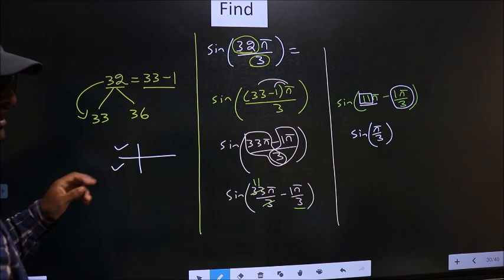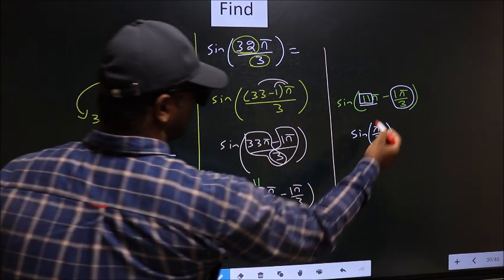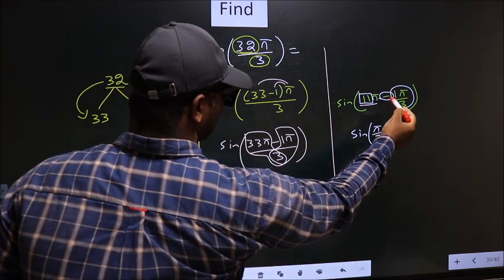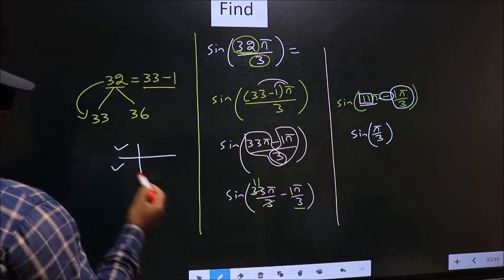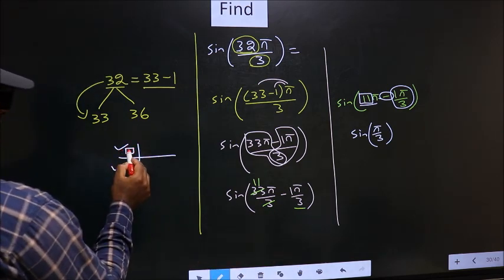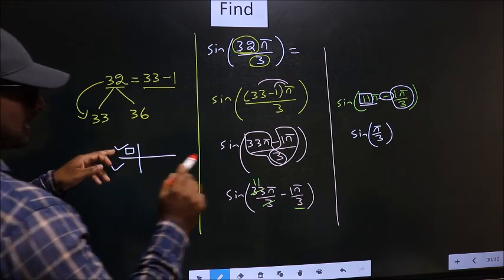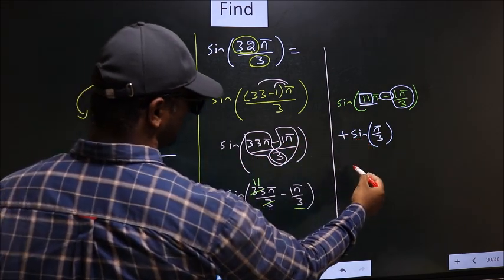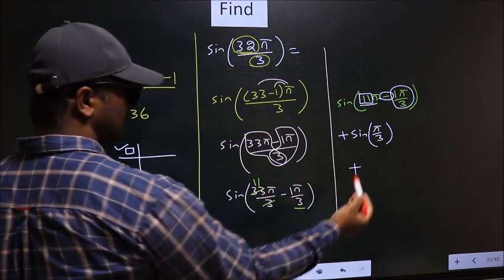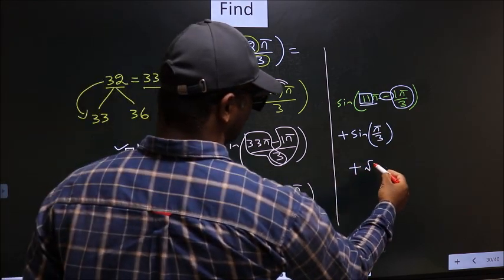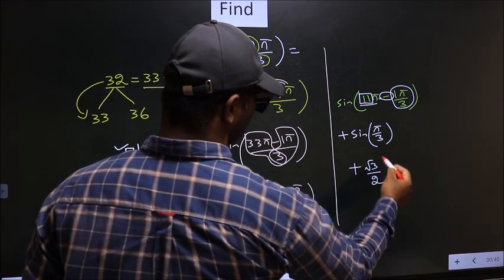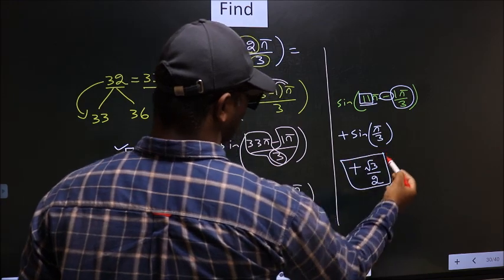To decide which quadrant does it lie in, you look at this symbol, negative. That means the angle lies in the second quadrant. In the second quadrant, sin is positive. So put plus. So plus sin π by 3 is root 3 by 2. So this is our answer.